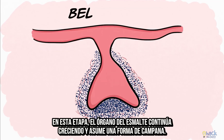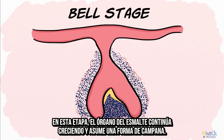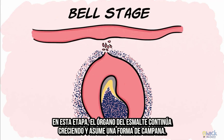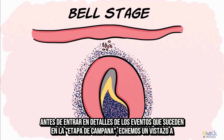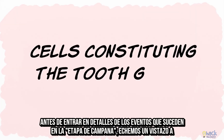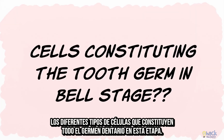In the bell stage, the enamel organ continues to grow and assumes a bell shape. Before we get into the details of the events happening in the bell stage, let's have a look at the different types of cells constituting the whole tooth germ at this stage.